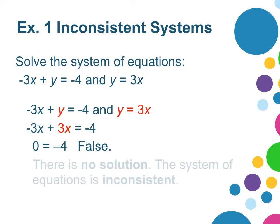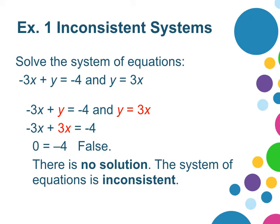When this happens, it means there is no solution. The system of equations is inconsistent. So we could have graphed these lines, and we would have noticed they were parallel, but we can also solve a system of equations using algebra.